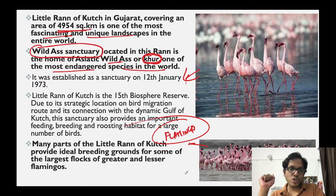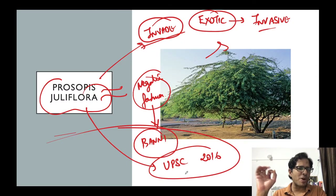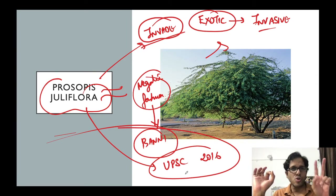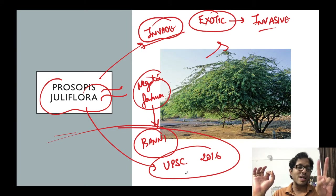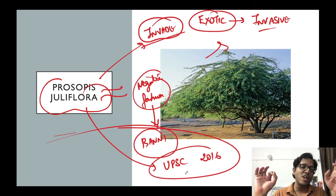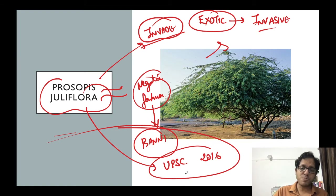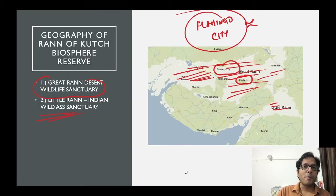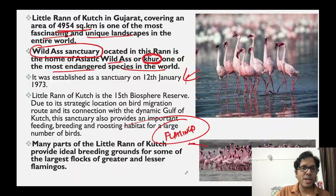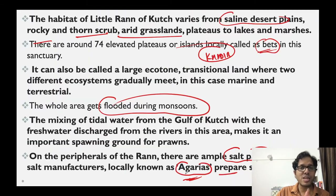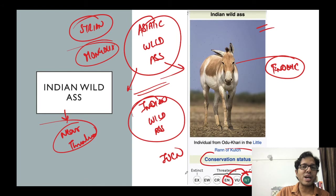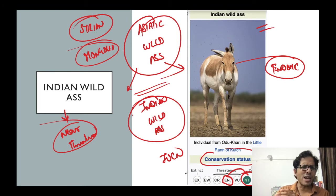So the crux of discussion: regarding Run of Kutch, remember two runs - Greater Run of Kutch and Little Run of Kutch - and the important species: Flamingos and Indian Wild Ass. This entire area has distinct biodiversity despite the saline marshes.